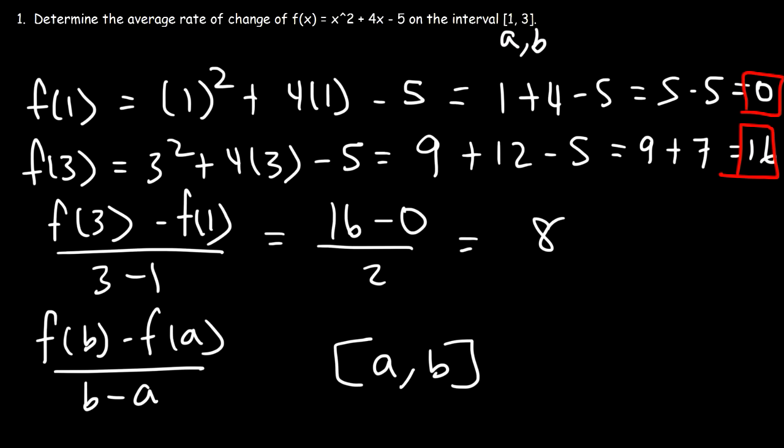So the average rate of change of the function over the interval [1, 3] is equal to 8. And that really represents the slope of the secant line.